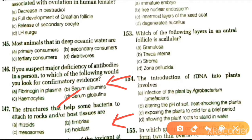Next question: what helps some bacteria to attach to rocks and host tissue? Options are rhizoids, fimbriae, mesosomes, and whole fats. The answer is fimbriae. Fimbriae are small bristle-like fibers that protrude out of cells and help bacteria attach to rocks.